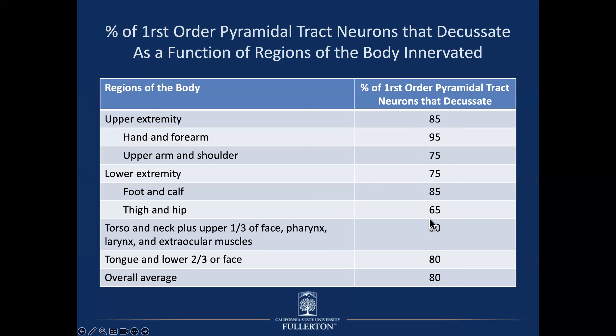Now we're going to lump together a bunch of muscles that don't seem very related, but you'll see how they are. The torso — basically your body, not the limbs — and the neck, and the upper one-third of the face. Also the pharynx, the larynx, and the extraocular muscles. We're not actually going to test the extraocular muscles, but it is a fact that they are in this same group. What unites these muscles is that they are innervated bilaterally — they get equal input from an uncrossed group of fibers and a crossed group of fibers, or another way to say it: they get equal input from both sides of the cortex.